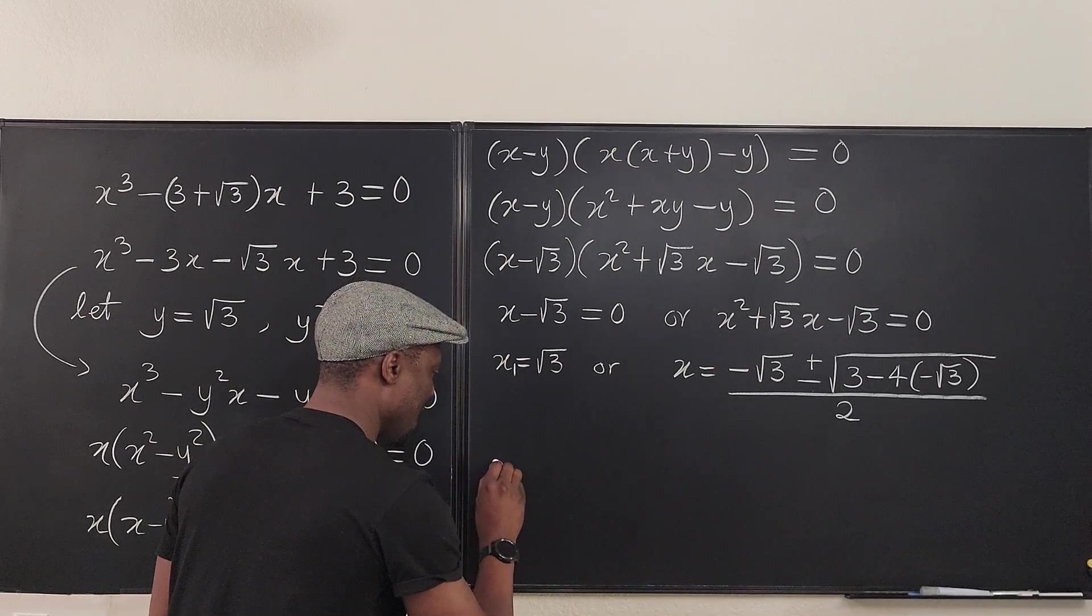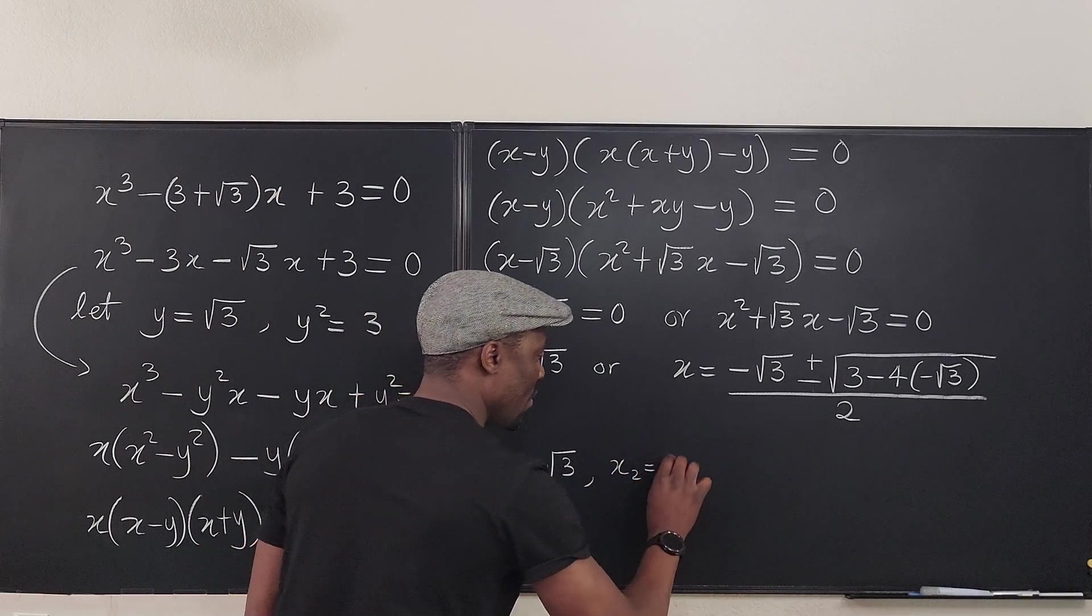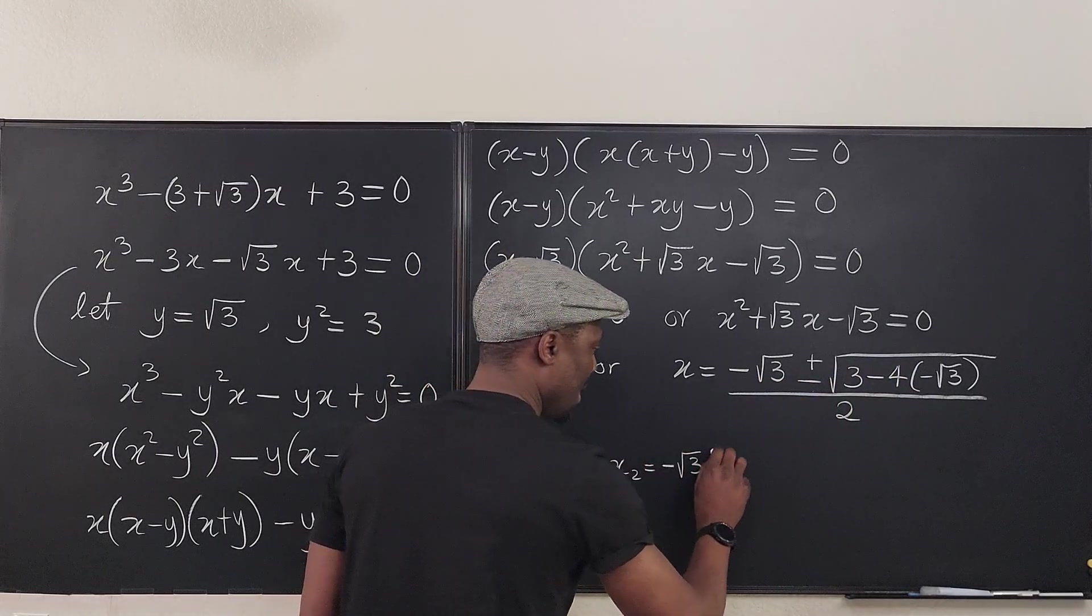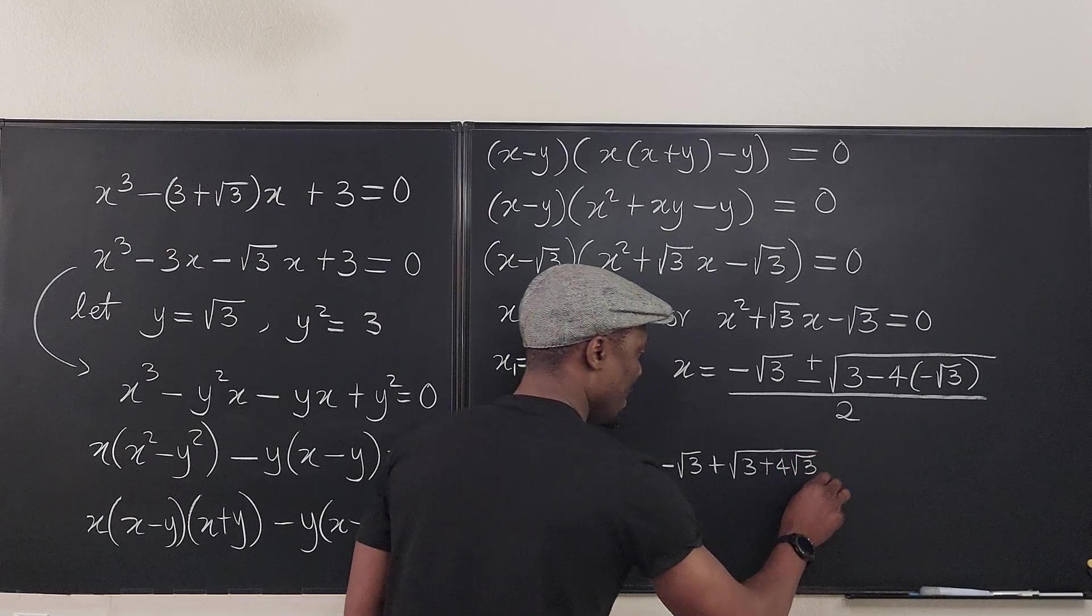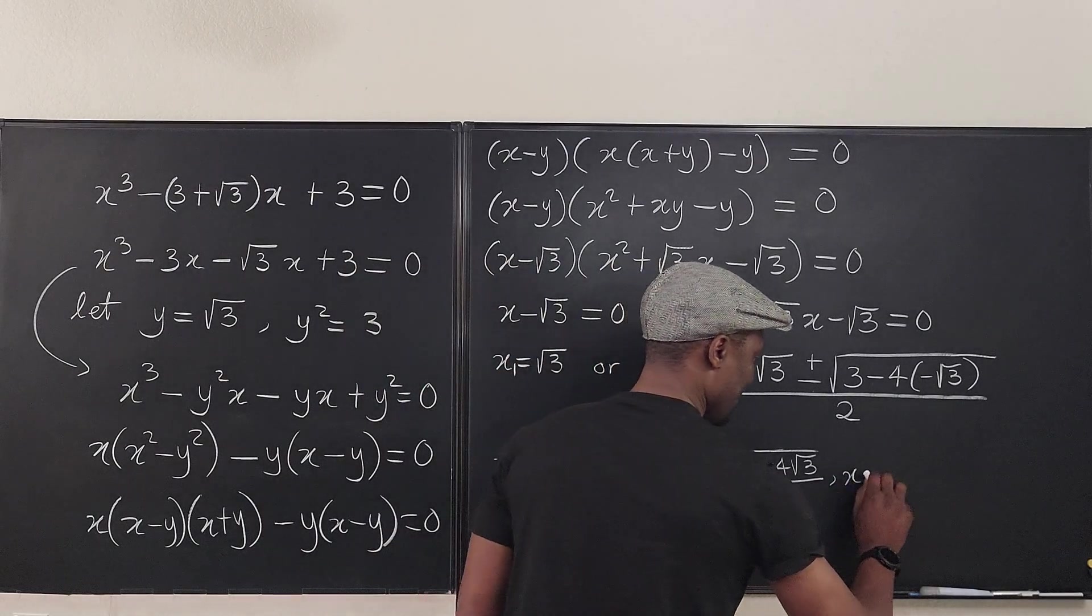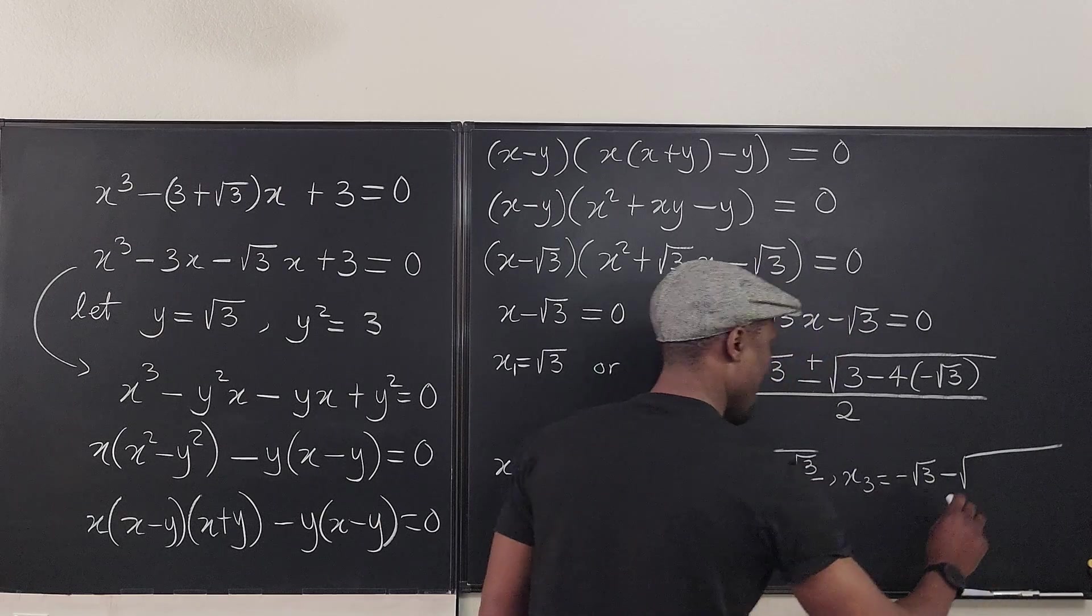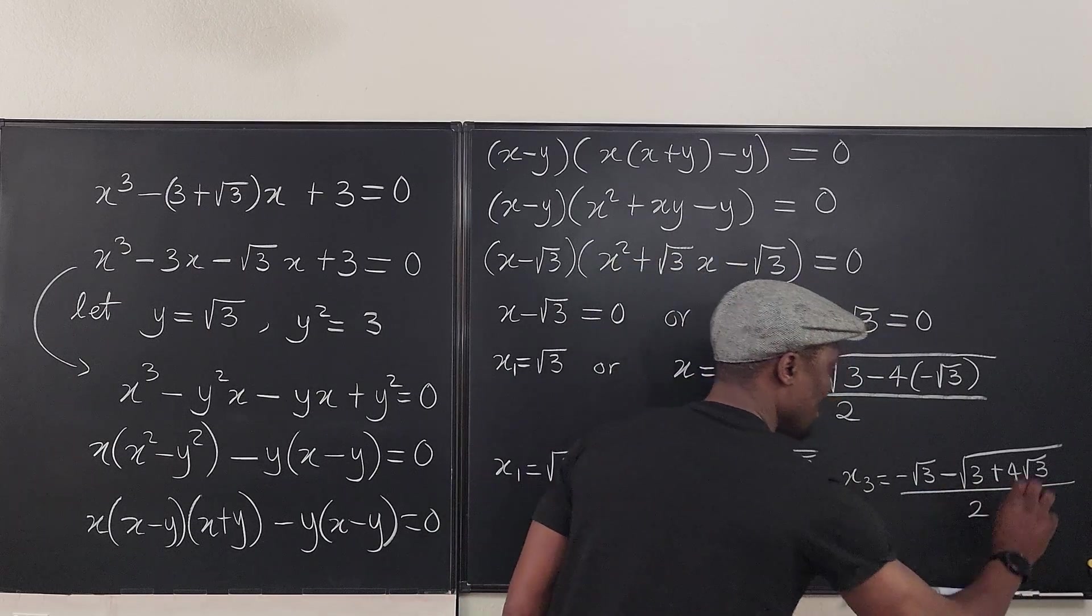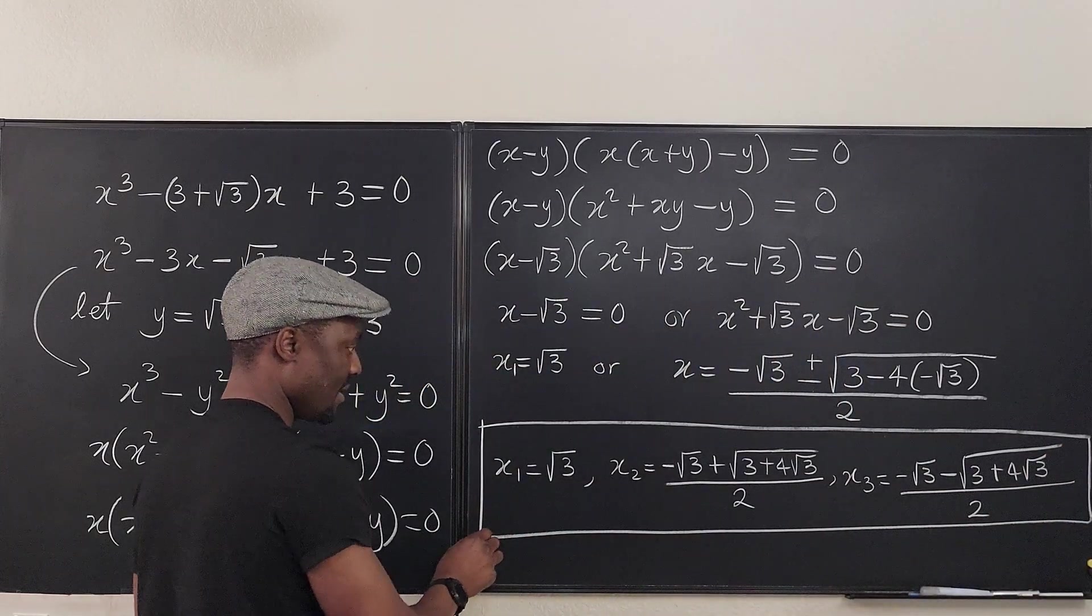So we can say that x₁ is equal to √3. We can say that x₂ equals -√3 + √(3 + 4√3) all over 2. And our x₃ is going to be -√3 - √(3 + 4√3) all over 2. This is the solution to this problem.